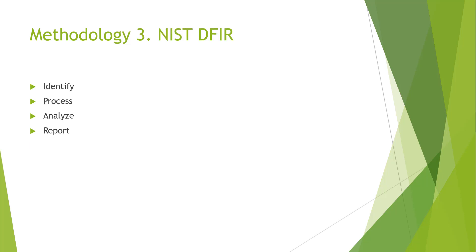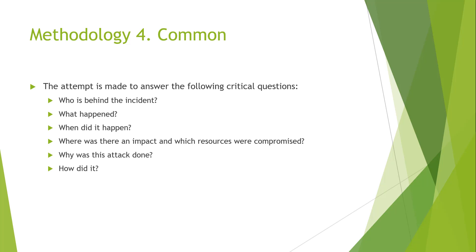NIST has their own general DFIR process: Identify, Process, Analyze, Report. You'll notice the common processes are always the same — identify, then process, which is where data collection occurs, then analyze what's been collected, and make a report based off of what you found. The general common-sense goal of what we're doing is figuring out the W's: who, what, when, where, why, and how.